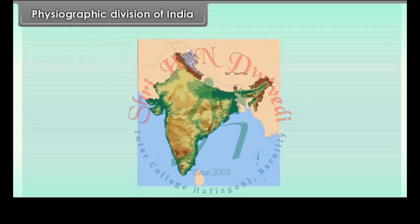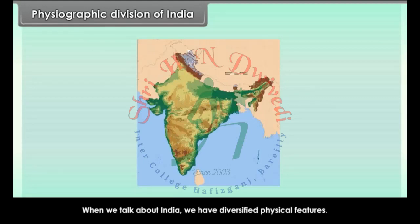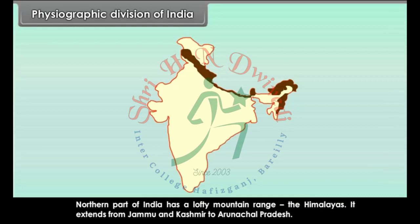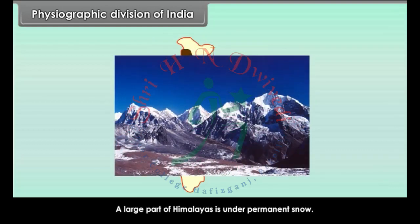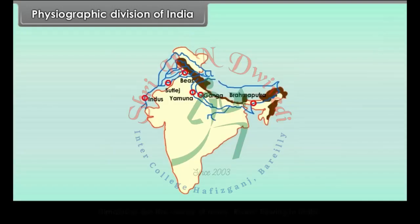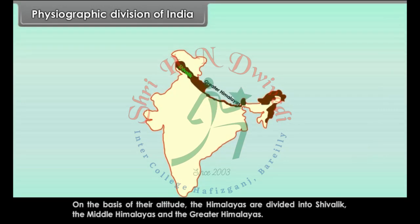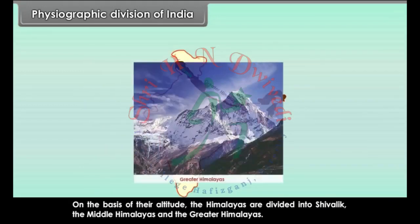Physiographic Division of India. India has diversified physical features. The northern part of India has a lofty mountain range, the Himalayas, which extends from Jammu and Kashmir to Arunachal Pradesh. A large part of the Himalayas is under permanent snow. The Himalayas are the source of many rivers flowing in India. On the basis of their altitude, the Himalayas are divided into Shivalik, the Middle Himalayas and the Greater Himalayas.